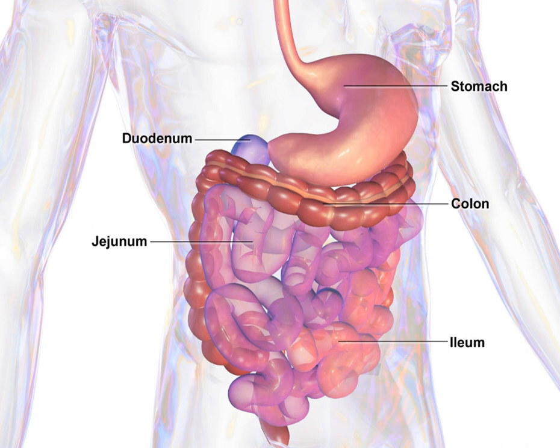The ileum is the final section of the small intestine. It is about 3 metres long and contains villi similar to the jejunum. It absorbs mainly vitamin B12 and bile acids, as well as any other remaining nutrients.